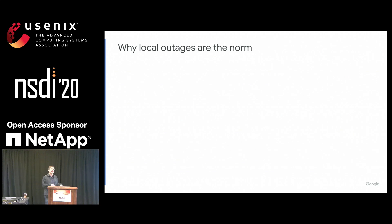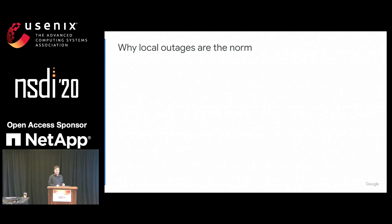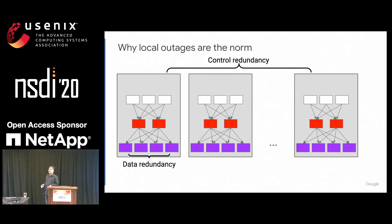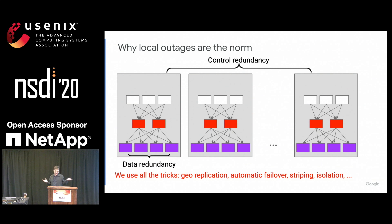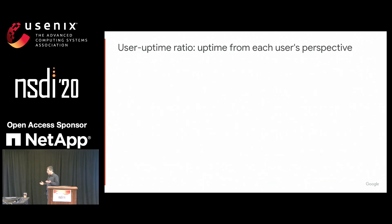If you look at articles about outages at Google, Facebook, etc., you'll find it's very rare that the whole system is down — it's usually some percent of users having a bad time. This is by design: our systems are built with control and data redundancy to make sure the system is never completely down. We even do gradual rollouts to discover problems when deployed to a small number of users before everyone has a bad time. As a result, our systems only have local kinds of outages.